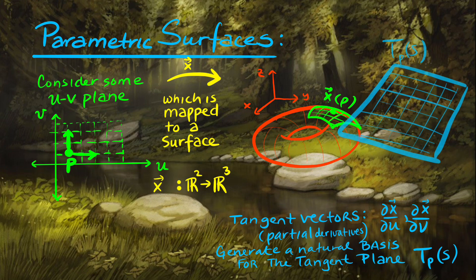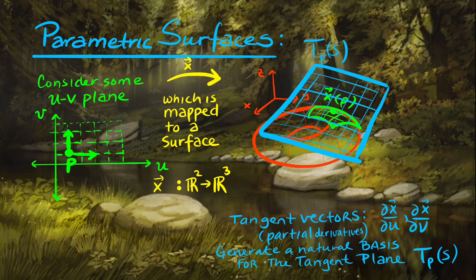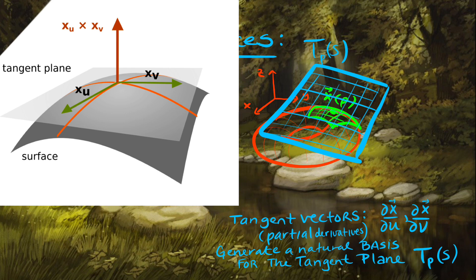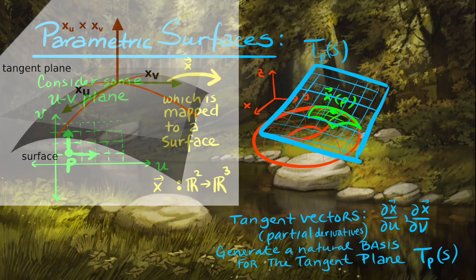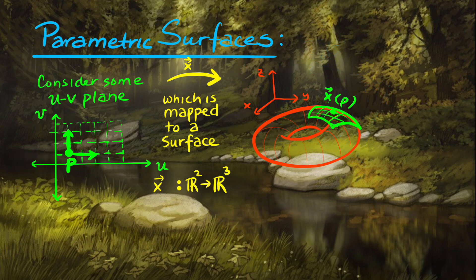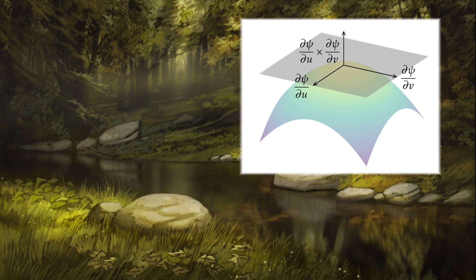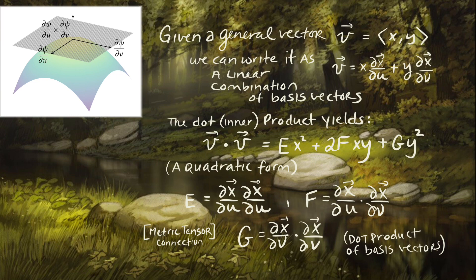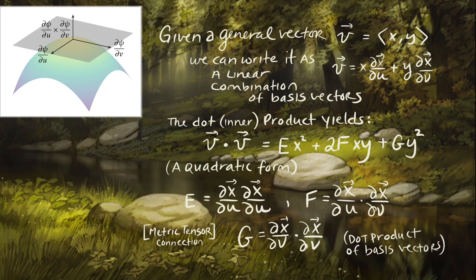The tangent vectors living on a tangent plane sitting atop the surface at a certain point can be defined by the partial derivatives ∂x/∂u and ∂x/∂v. Those two partial derivatives are the basis vectors that form and determine the tangent plane. So if you have a surface at a particular point and it is a regular surface, you can define a tangent plane at that point. Later we will see that calculations using the inner product of vectors on this tangent plane allow measurements in an intrinsic way.